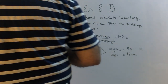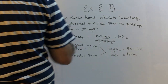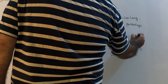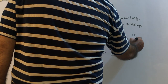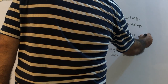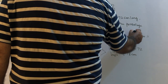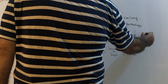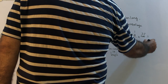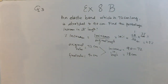Now we plug in the numbers into the formula: percentage increase = 18 over 72, multiplied by 100 percent. Simplifying: 18 over 72 equals one quarter, and one quarter of 100 is 25 percent. The answer for question number three is 25 percent.